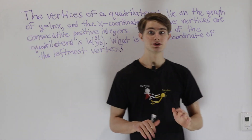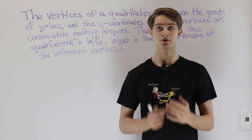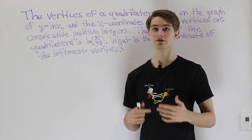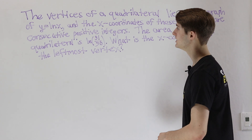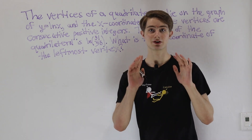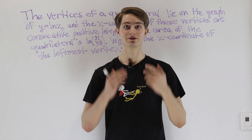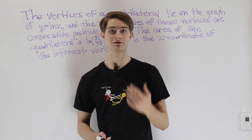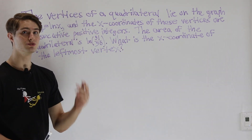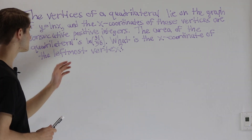In order to do this problem, we're going to need to learn an important method for calculating the area of a polygon. In this case, we're looking at a quadrilateral, and that method is called the shoelace method. The shoelace method is awesome, and if you have not seen it yet, you should definitely watch this video through to the end so you can see how it works.